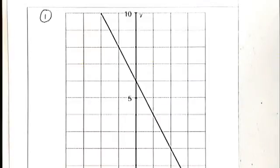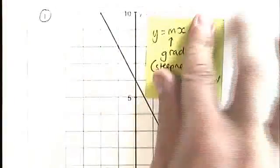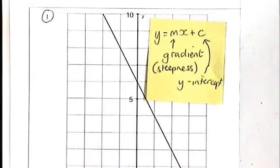In this video, we're going to look at how you find the equation of a line which has a negative gradient. As in the first video on this topic, what you need to know is that the equation of any straight line can be written using this formula, y equals mx plus c, where m is the gradient or the steepness and c is the y-intercept.